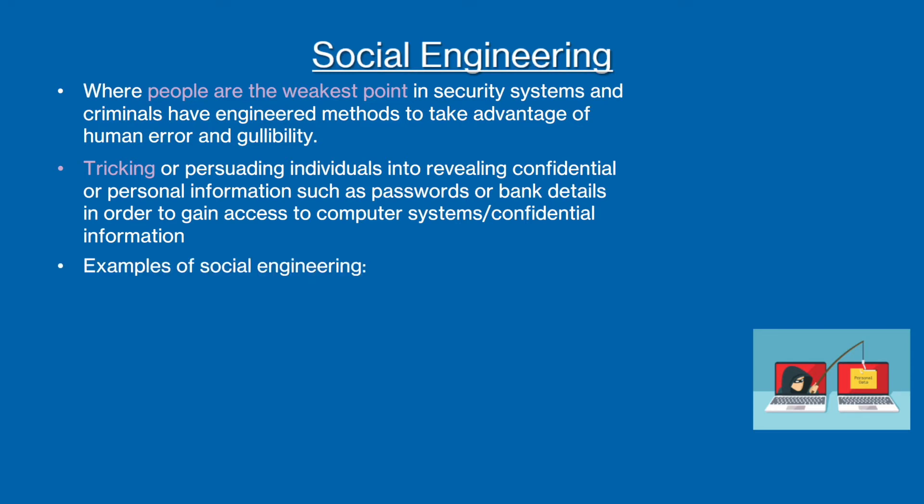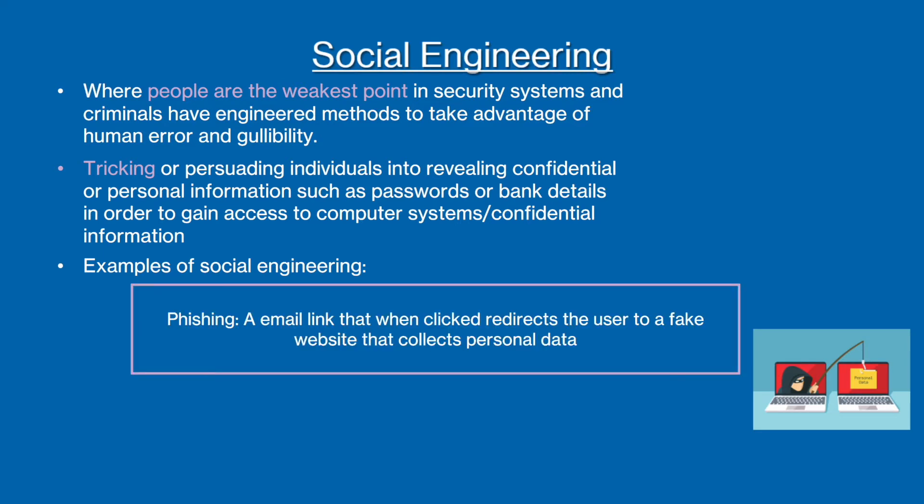There are two main types of social engineering. The first is called phishing. Here, an email is sent to the victim with a link that, when clicked, redirects the user to a website that collects their personal information and gives it to the attacker, who uses this information to gain access to the user's personal data and accounts.